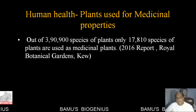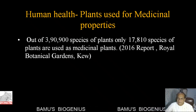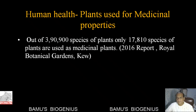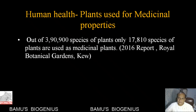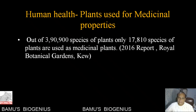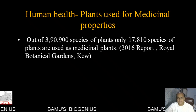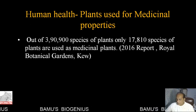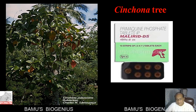Another very important aspect of biodiversity is plants used for medicinal purposes, for the betterment of human health. Out of 390,900 species of plants, 17,810 species have been identified as medicinal plants. These medicinal plants are used in a variety of ways.